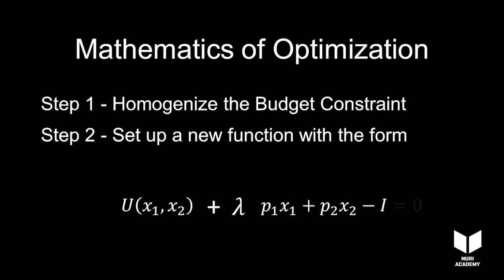...lambda times the budget constraint. Don't worry about the lambda—it's just a new variable that you've introduced. We're going to use it later. It's called the Lagrange multiplier. You could use a potato instead of the letter lambda, but lambda is the convention.